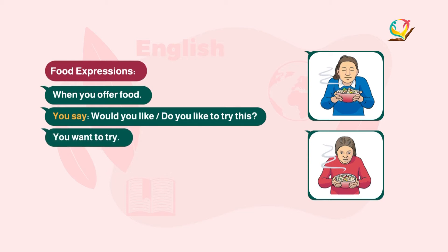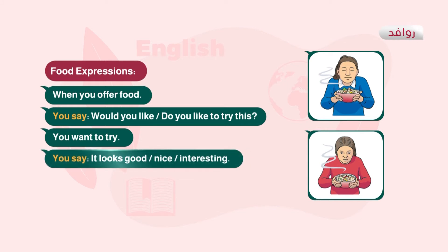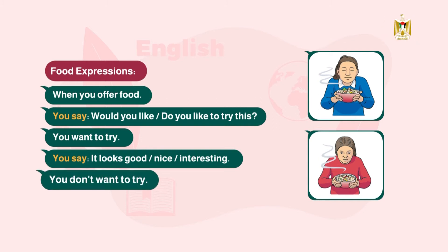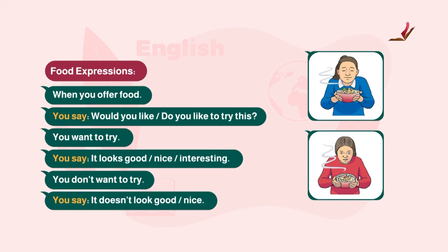When you want to try, ولكن إذا أردت أن تجرب أو تتذوق الطعام تقول: It looks good, or It looks nice, or It looks interesting. When you don't want to try, إذا لم يكن لديك رغبة في تذوق الطعام المقدم لك، نقول: It doesn't look good, or It doesn't look nice.